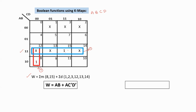For the first group, this group lies in the row where A=1, B=1 and spans all columns. Since there are equal numbers of 0s and 1s for C and D, those variables are skipped. This gives the term AB. For the second group, it lies in two rows where A=1 is common, and in the first column only where C=0, D=0. This gives the term A·C'D'. Therefore W = AB + AC'D'.